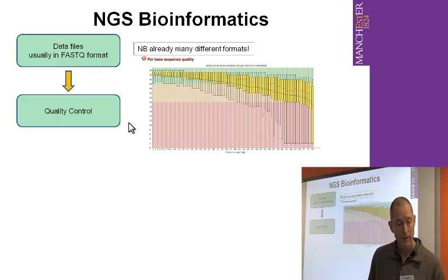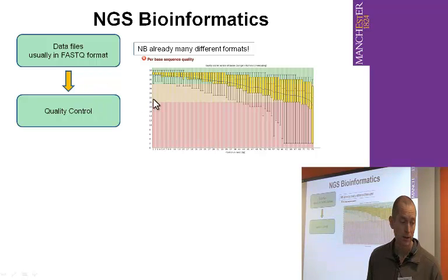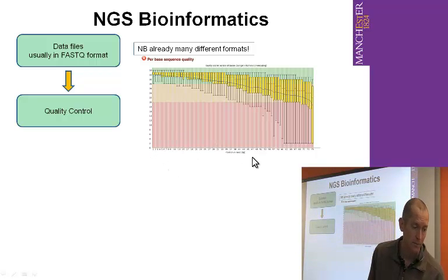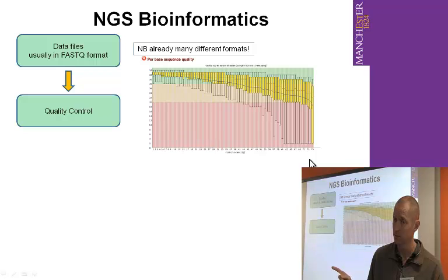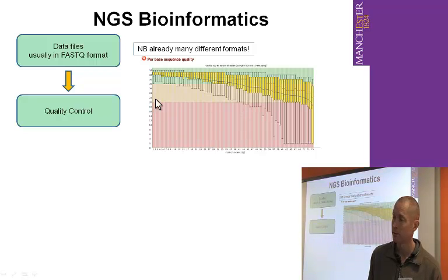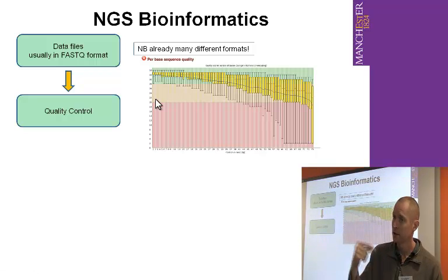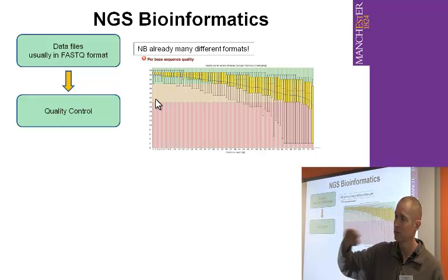One of the main things we use to assess quality is this kind of plot. What we've got here is a 75 base pair read. The read is 75 base pairs long, and when you start on the 5-prime end the quality is the best. But errors accumulate as the sequence progresses into the 75 bases, so quality tends to deteriorate.